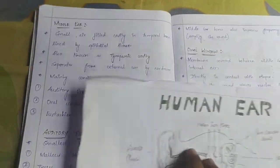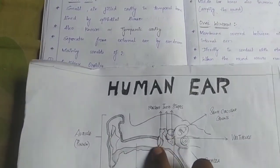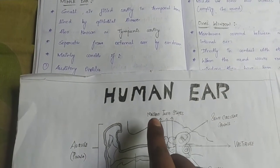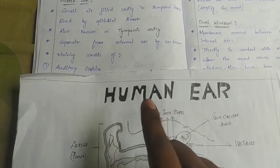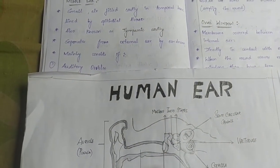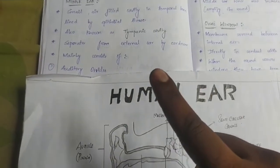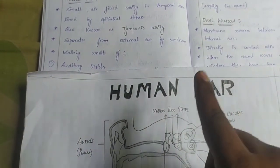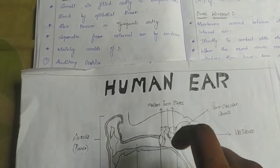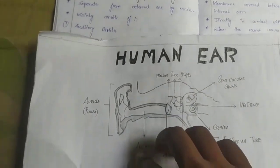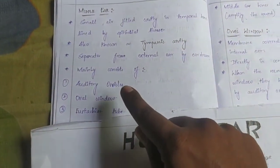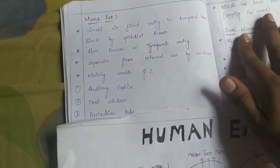Next is the middle ear. The middle ear is a small air-filled cavity in the temporal bone, lined by epithelial tissues. This is called the tympanic cavity. It is separated from the external ear by the ear drum. The main parts of the middle ear are the auditory ossicles, oval window, and Eustachian tube.